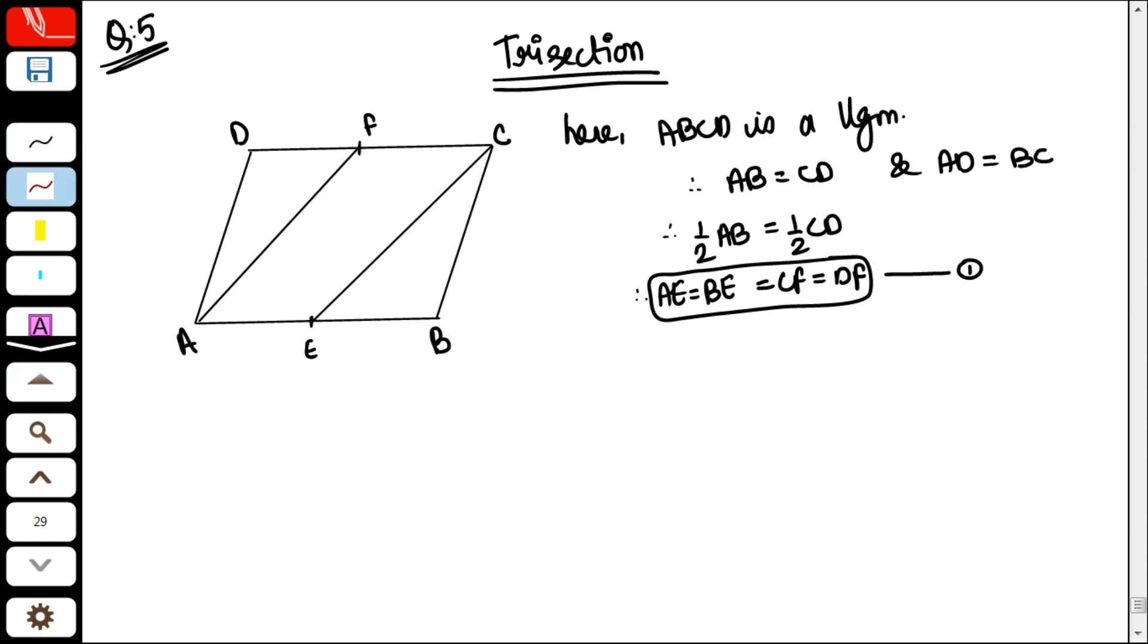These line segments AF and EC, this diagonal BD, they are trisecting it. What does trisect mean? Three equal parts. Understand the meaning of the question?